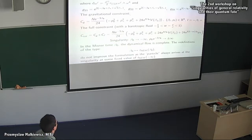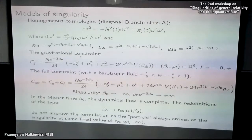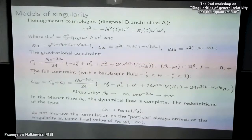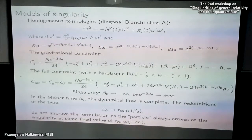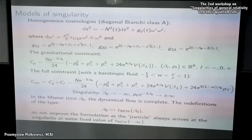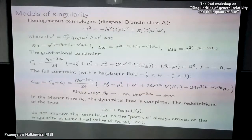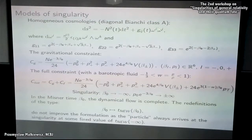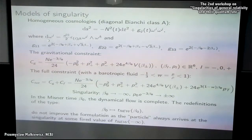Let me begin by very rapidly recalling the diagonal Bianchi class A models. In these models, the spatial leaves are identified with a three-parameter group. If you identify the Killing vectors with left-invariant fields, then right-invariant fields and dual forms are suitable for expressing the homogeneous metric, the spatial components of the metric, and the respective Cartan equations encode the structure constants of the respective d-group.